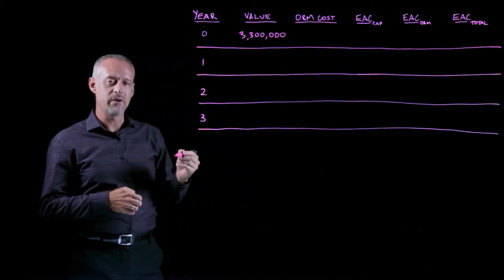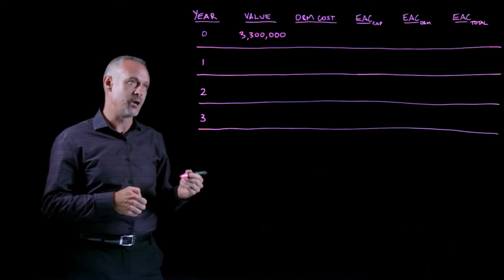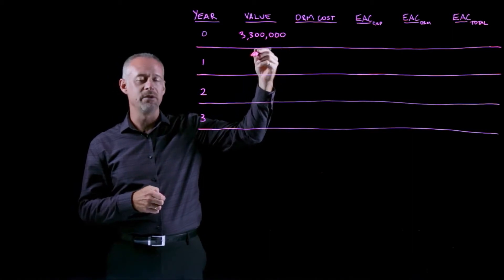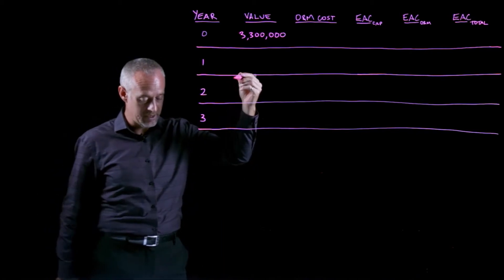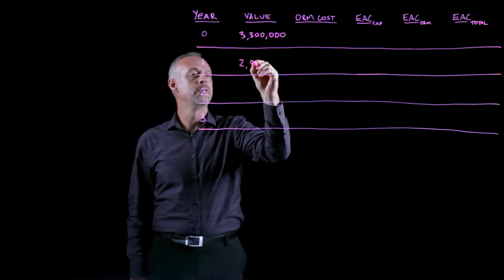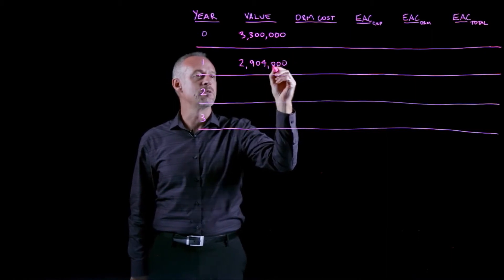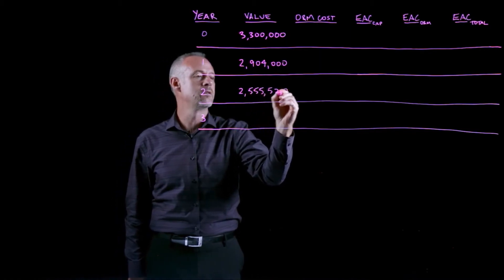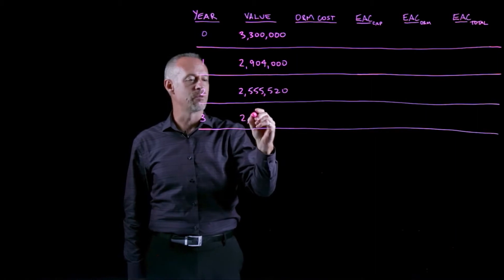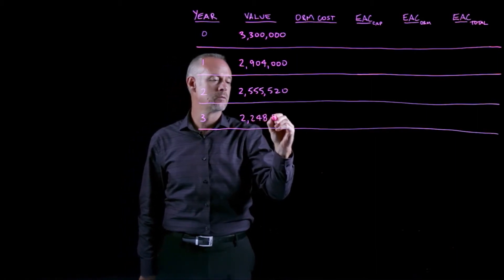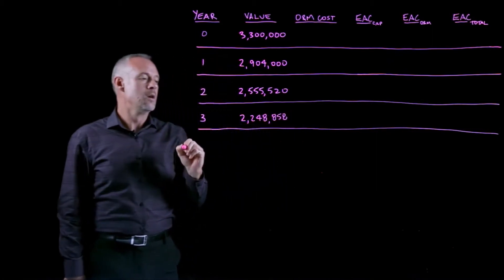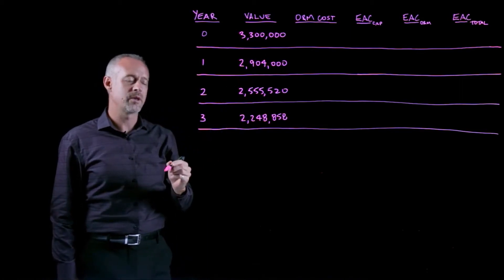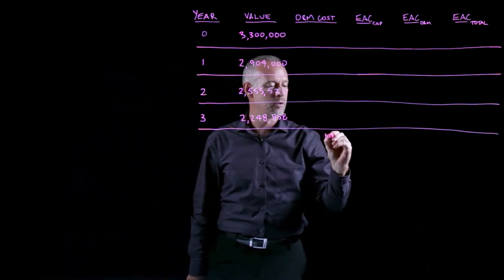We're also told that the value of the equipment decreases by 12% every year. So it's quite easy to take this number and multiply by 1 minus 12% or multiply by 88%, and that gives us a declining balance. At the end of year one, the value is around 2.9 million. At the end of year two, the value is about 2.5 million. And at the end of year three, the value is around 2.2 million. We're also told that the company uses a MAR of 10%.